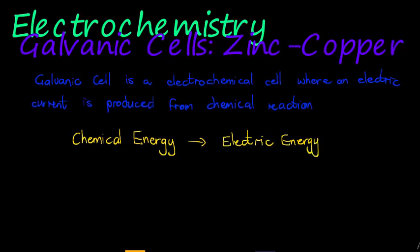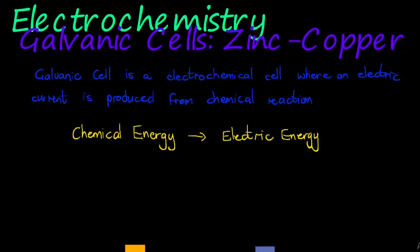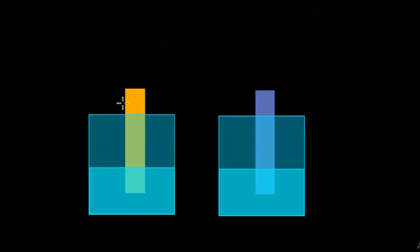Let's look at the zinc-copper cell. Imagine we have two electrodes: one is a copper electrode sitting in a solution that has copper two-plus ions in it. In another solution we have zinc cations — zinc two-plus — and a zinc electrode in an electrolyte solution with zinc cations.